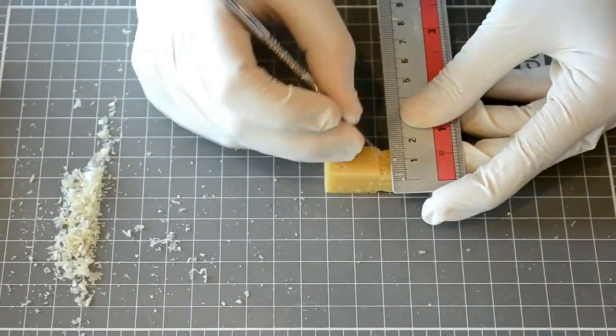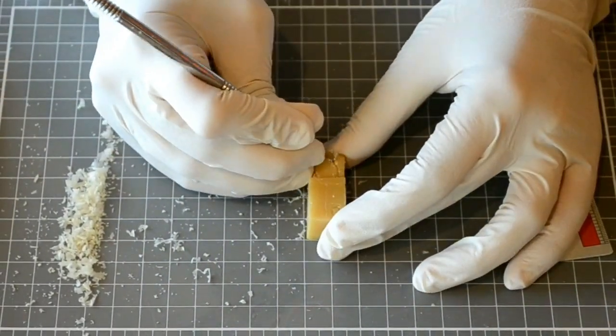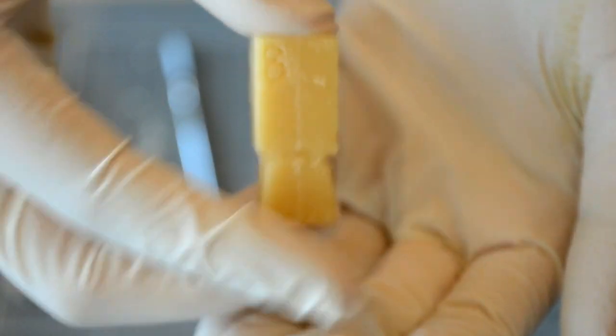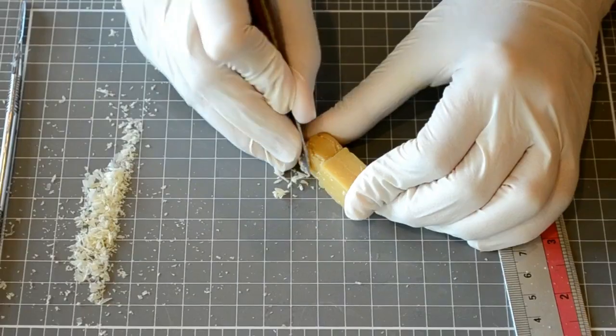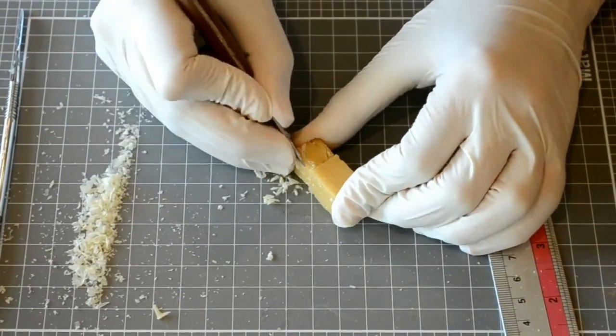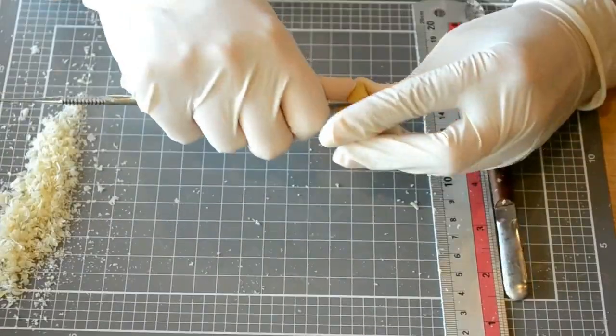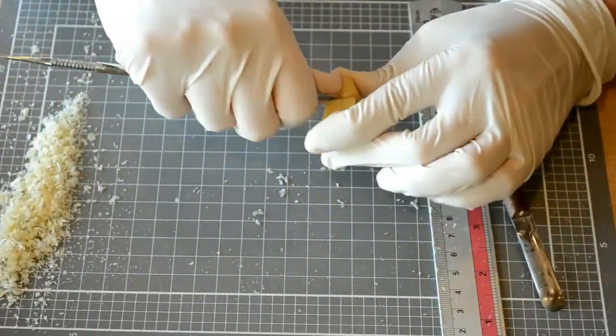Repeat the same steps for the distal aspect. Now you can start carving the mesial and distal aspects. Use your wax knife for initial carving, then move on to using the lecron carver for smoother finishing.